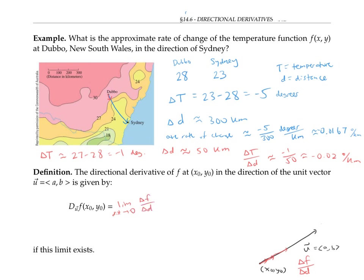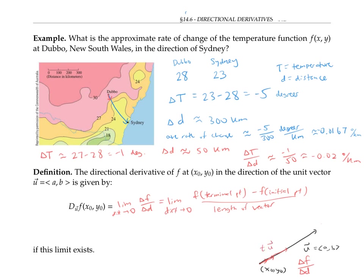To calculate ΔF, we need to figure out the F value at the terminal and initial point of each one of these vectors. ΔD, the change in distance, is just the length of the vector. Each of these vectors goes along in the direction of u, so it can be written as a rescaled version of u — it can be written as t times u. And since u is a unit vector by assumption, the length of t times u is just t.